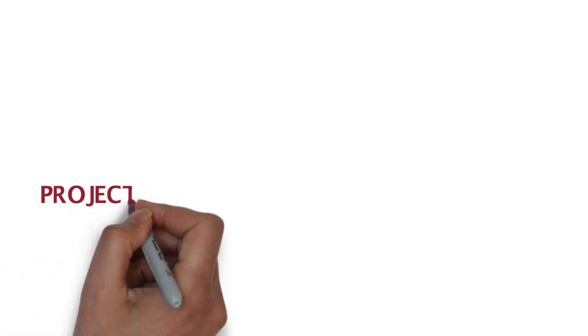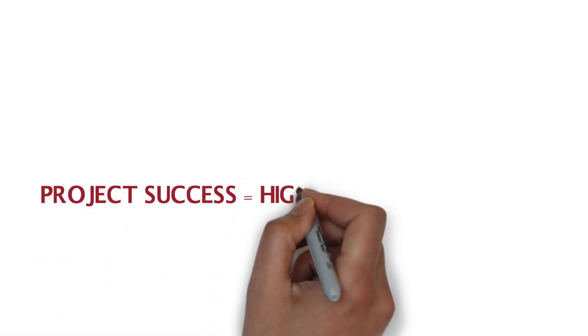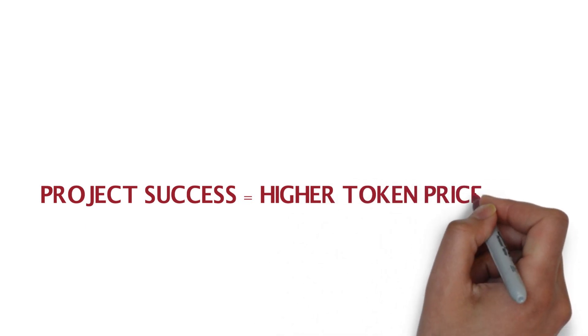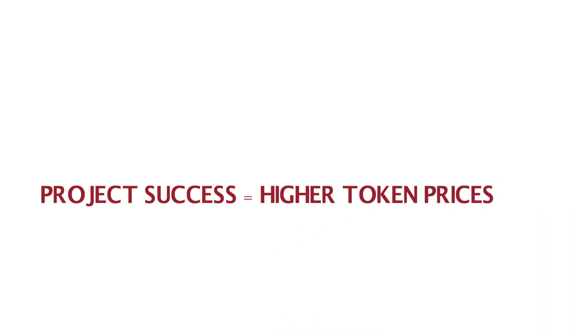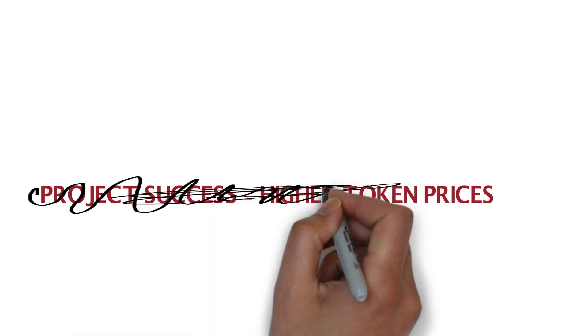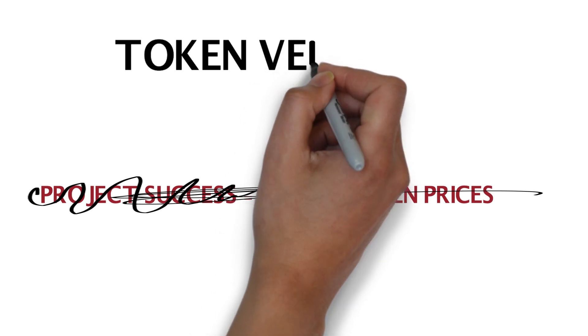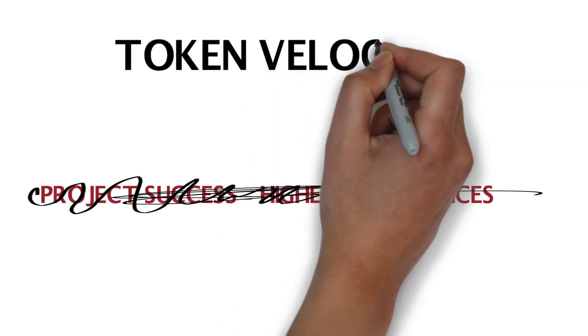In this video I'll be explaining why many cryptocurrency projects could be successful and yet the tokens may never rise in value. The projects you love may someday have worthless tokens even though the project is successful. The reason relates to an issue called token velocity.